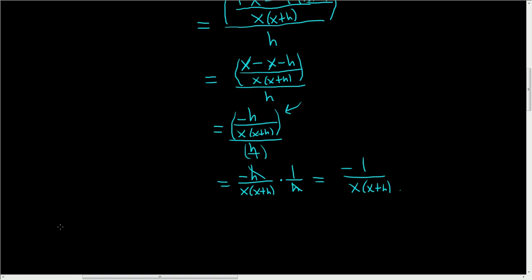So to finish, we'll take the limit. So the derivative of f with respect to x is the limit as h approaches 0 of the difference quotient. That's what we computed. So f of x plus h minus f of x, all divided by h. But we simplified this. So this is the limit as h approaches 0 of negative 1 over x times x plus h.